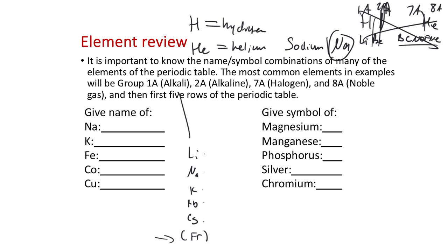Sodium's symbol is Na. K is potassium — sometimes we get potassium confused with the symbol P, but the symbol P is for phosphorus. Fe is iron. Co and Cu are good to distinguish: cobalt is Co and copper is Cu. Magnesium is Mg and manganese is Mn — those look pretty similar, so be careful: Mn is manganese and Mg is magnesium.